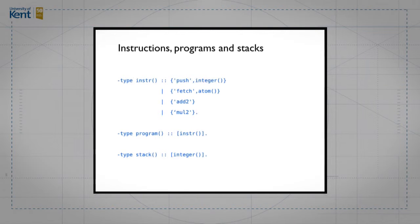We first think about how to represent these things as types. There are four different sorts of instructions, so we'll have four different kinds of data. As we did previously with expressions, we use an atom to tell us which kind of instruction we have — that's the first field in these tuples. Some instructions are just a single-field tuple, like the two arithmetic operations. For the data instructions, push has an integer component and fetch has an atom which is the variable name.